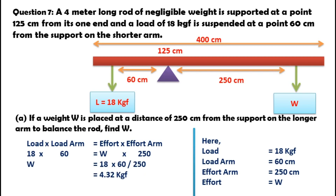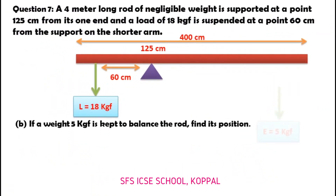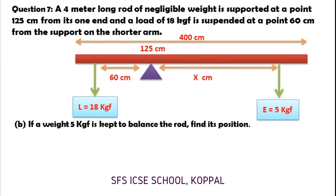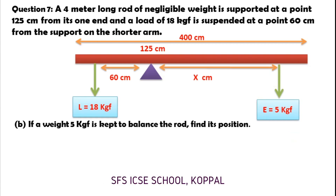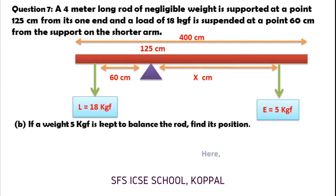Now, Part B: If a weight of 5 kgf is kept to balance the rod, find its position. Please note — students usually make a mistake here because they combine this part with Part A. The effort and effort arm of 250 cm were used only for Part A. We must use only the values given in the main question: load is 18 kgf, load arm is 60 cm.